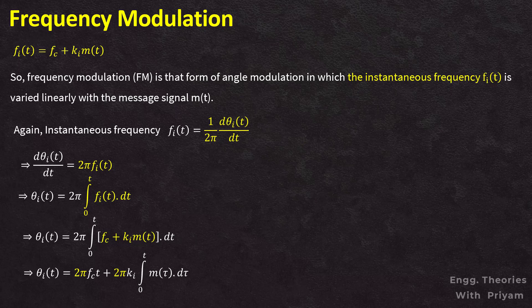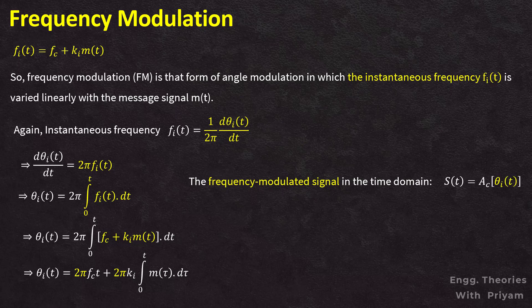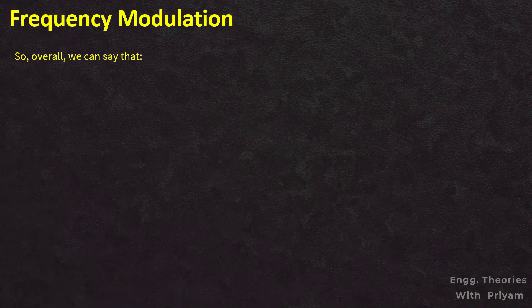The frequency modulated signal is described as s(t) = Ac·cos(θi(t)). Replacing θi(t) with 2πfc·t + 2πki · ∫₀ᵗ m(τ) dτ, we have s(t) = Ac·cos(2πfc·t + 2πki · ∫₀ᵗ m(τ) dτ).